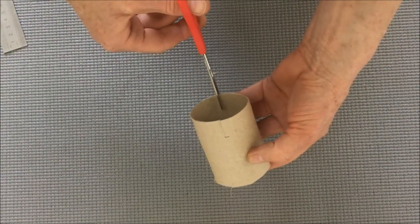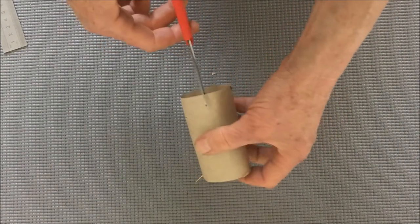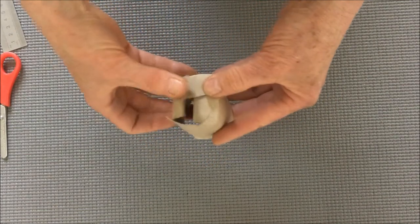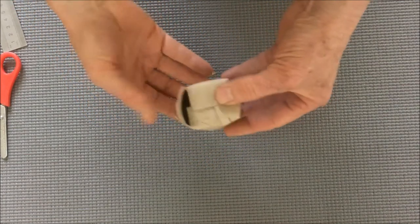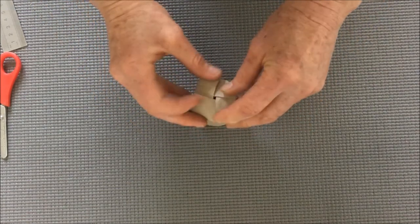One at 12 o'clock, one at six o'clock, one at quarter past, one at quarter to, and then begin by folding these over. When you get to the last one you just tuck it underneath like so to lock them in position.